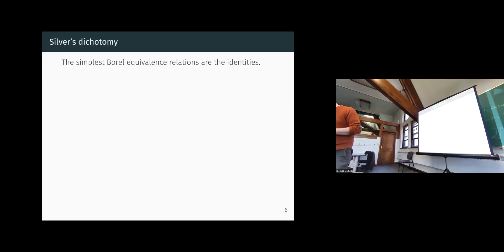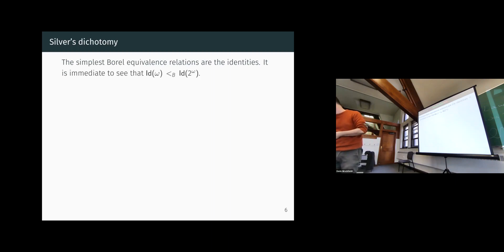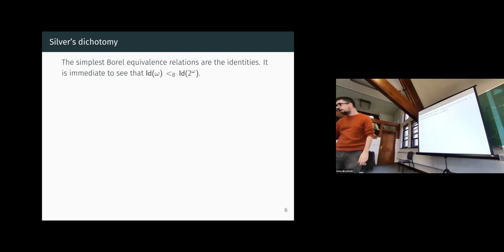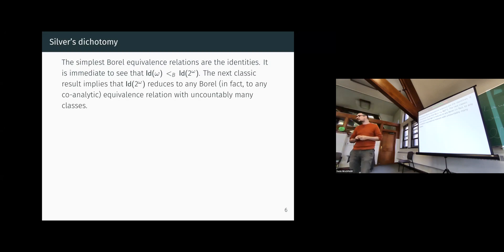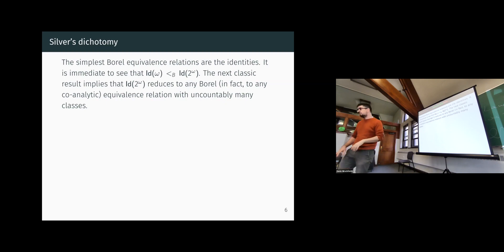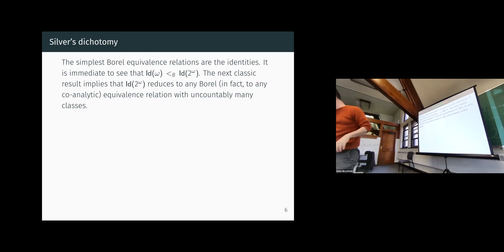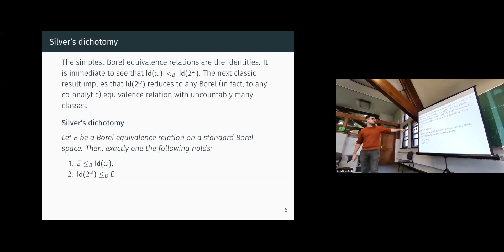Let's start with the math, extremely simply. The simplest Borel equivalence relations are the identities. It's easy to see that the identity on the natural numbers is Borel-below the identity on Cantor space. In fact, one can say much more: the identity on Cantor space is the least equivalence relation, up to Borel reducibility, of all Borel equivalence relations — it reduces below even any co-analytic equivalence relation. As long as the equivalence relation has uncountably many classes, you can always reduce the identity on Cantor space to it. That is the content of the famous Silver's dichotomy.